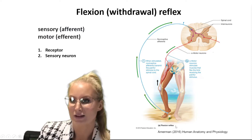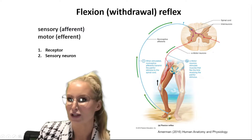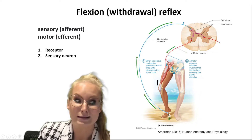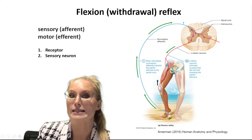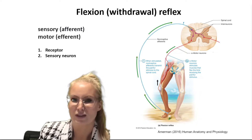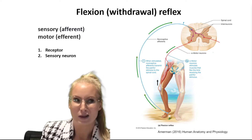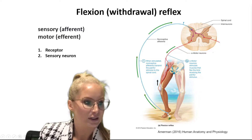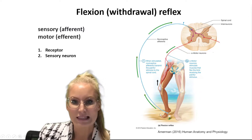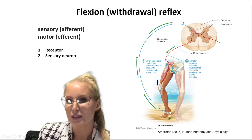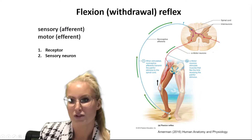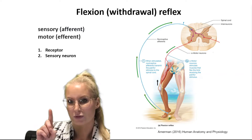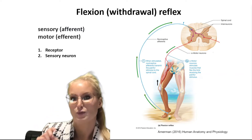Let's say you've stepped on something sharp — that hurts. That sharp object digging into your foot is the stimulus. We have to convert that stimulus, that mechanical energy, into electrical energy. There are nociceptors in the skin that are stimulated by this injury, and those nociceptors are the first component of the reflex — the receptor.